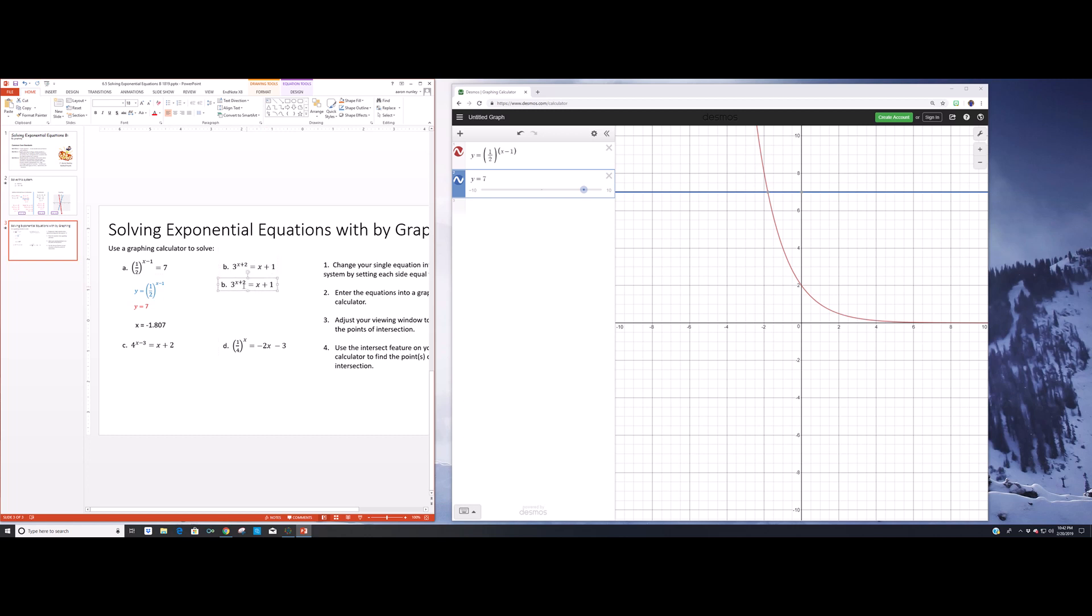I'm going to copy that and I'm going to split this into two equations as well. I'm going to make one of them y equals 3 to the x plus 2. And then I'm going to make the second one y equals x plus 1. I'm going to go ahead and make this one blue for you, just so it matches my other one. I'm also going to make this one red for you, so it matches the other one. Notice, I've taken that single exponential equation and I've split it into two parts. Let's see if we can find the solution to that one.